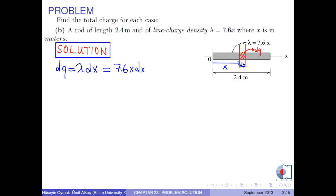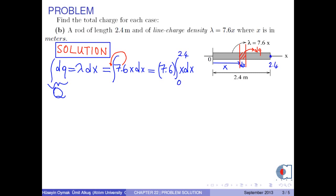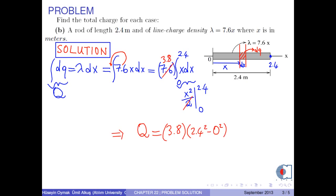Since lambda is 7.6x, if we take the integral of both sides, we write the integral of dq as the total charge. Since 7.6 is a constant, it can be taken outside the integral, leaving x times dx inside. The integral runs from 0 to 2.4 meters. Because the integral of x is x squared over 2, we have 3.8 times (2.4 squared minus 0 squared). Therefore, the total charge is approximately 21.9 nanocoulombs.